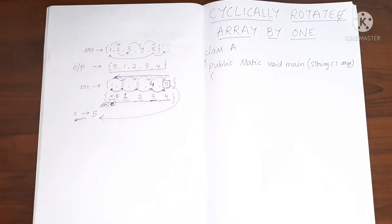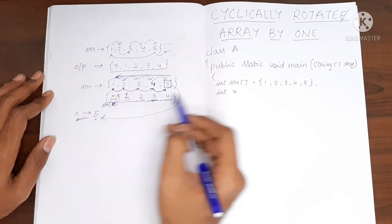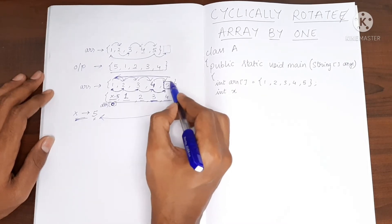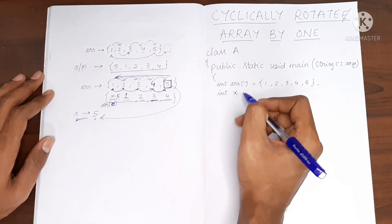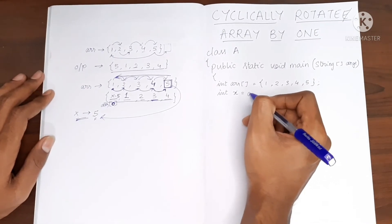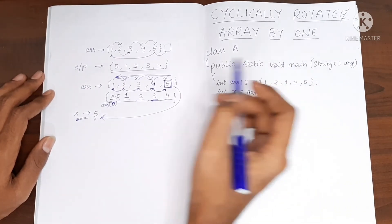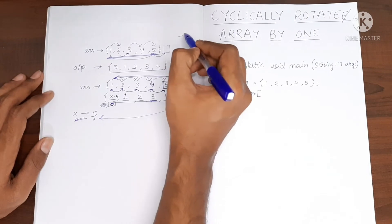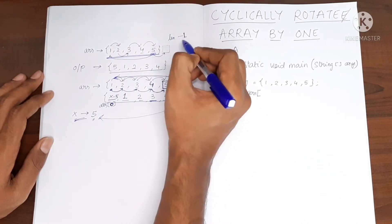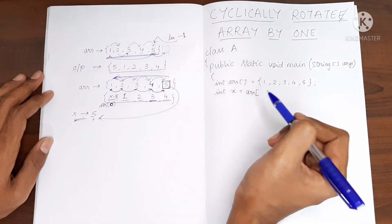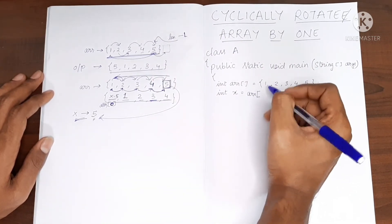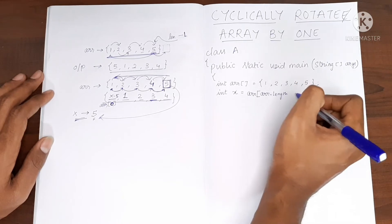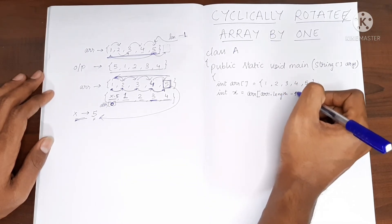So now let's write the code for this. I will create a variable x in which I am going to store the value present at the last index. So x is equal to the value at the last index location, which is the length of the array minus 1. So I will do ARR of length minus 1.